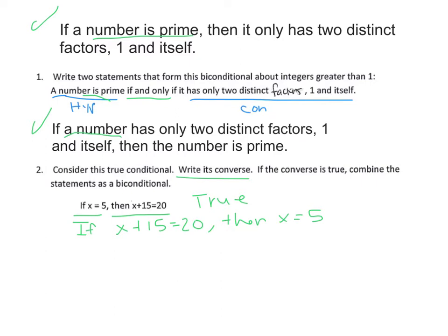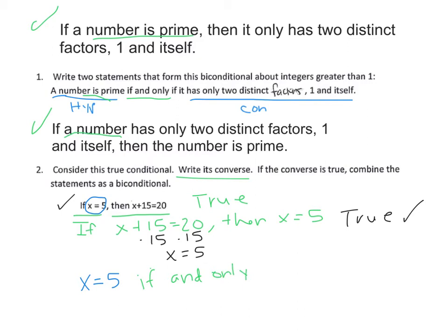If you subtract 15 from each side of x plus 15 equals 20, you get x equals 5, so the converse is true. Since both the conditional and the converse are true, write it as a biconditional: take the hypothesis 'x equals 5,' insert 'if and only if,' then write the conclusion 'x plus 15 equals 20.'